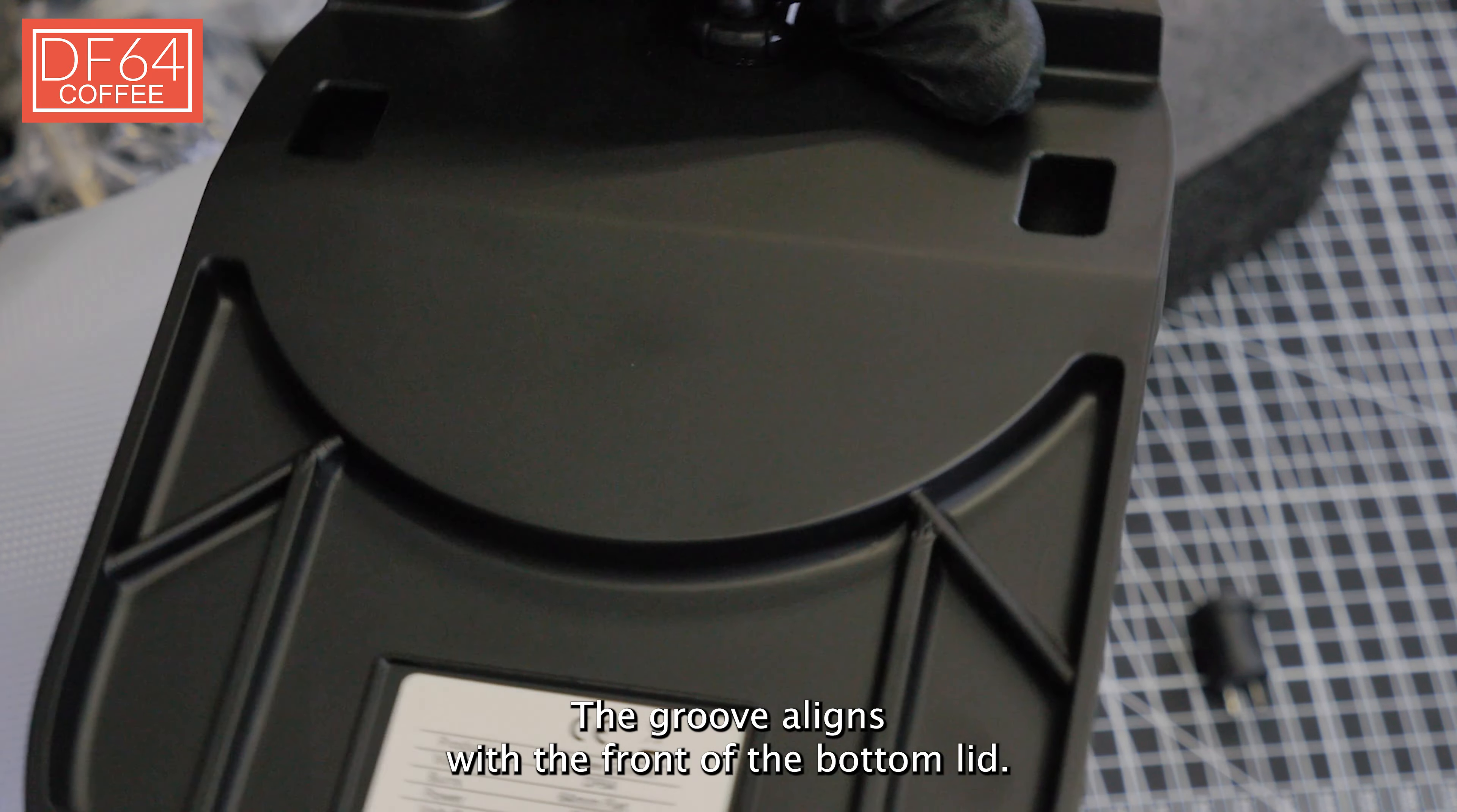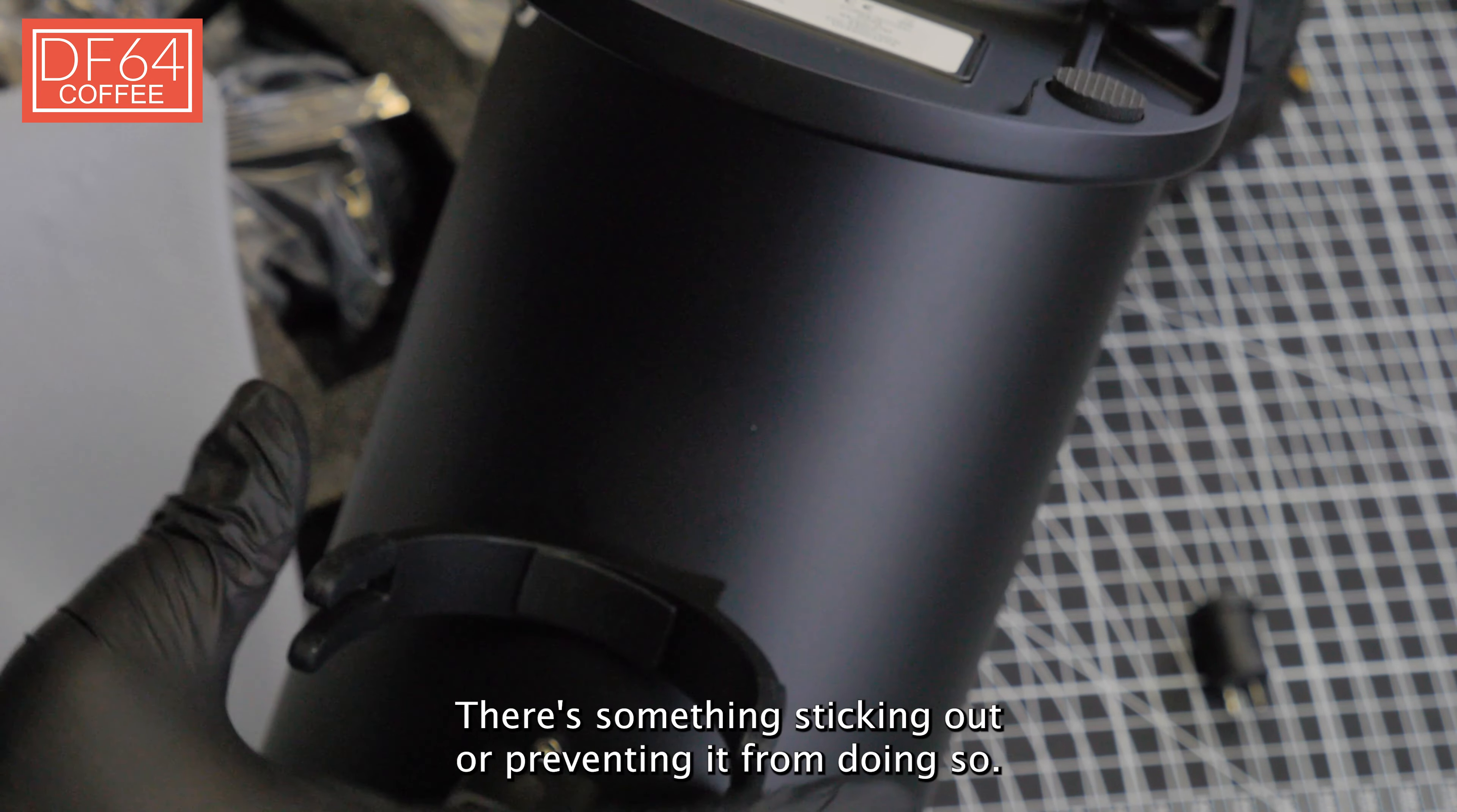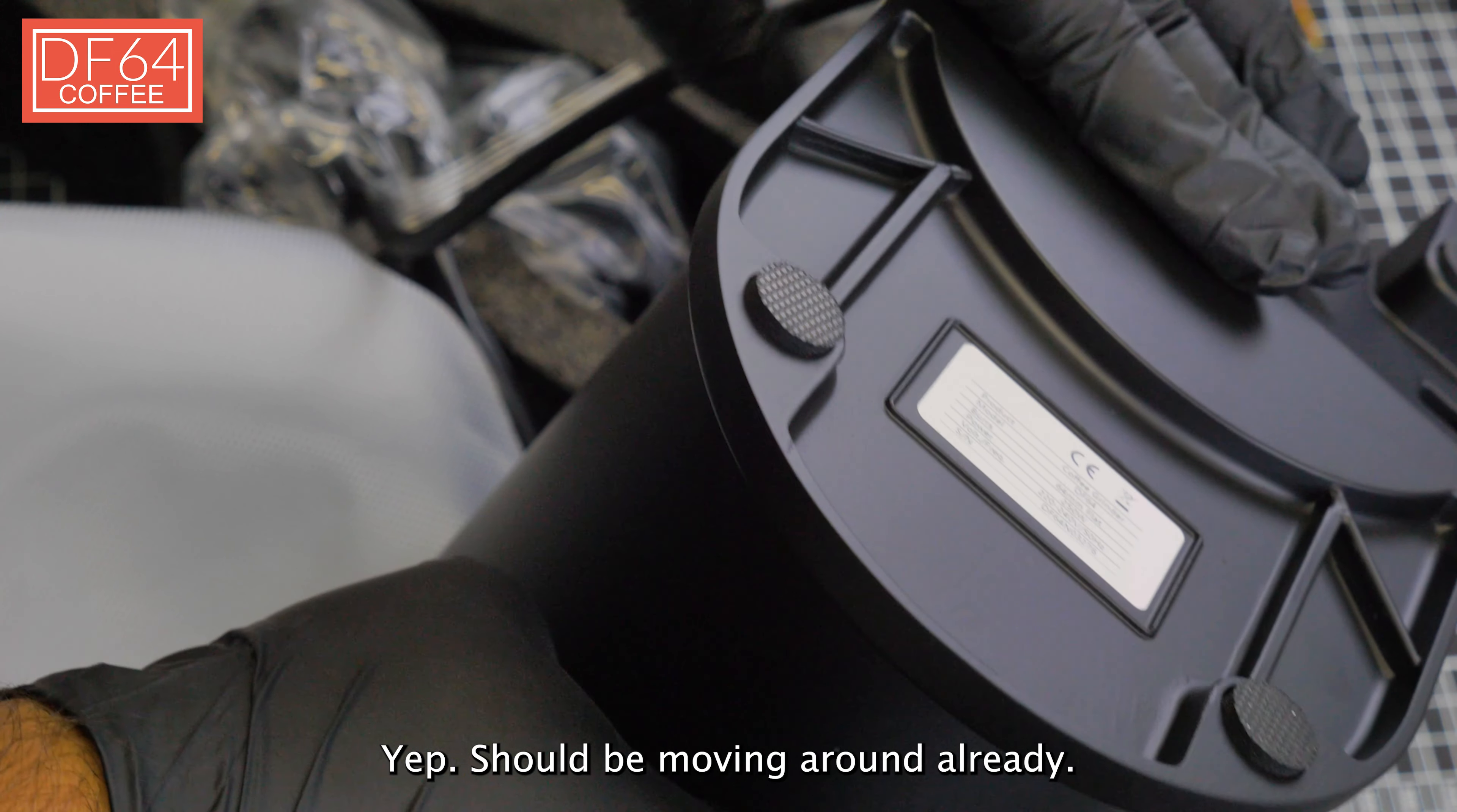Okay, you're done. There you have it, switch is installed. All you need to do is put it back. The groove aligns with the front of the bottom lid so this should be the placement. It should sit nicely. If you don't think it sits nicely, it's probably because there's something sticking out or preventing it from doing so. Make sure everything is in.